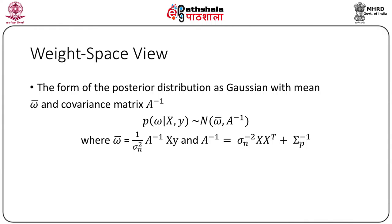Now we will talk about the function space view. A Gaussian process is a collection of random variables, any finite number of which have a joint Gaussian distribution. A Gaussian process is completely specified by its mean function m(x) and covariance function k(x, x'). We define m(x) = E[f(x)] and k(x, x') = E[(f(x) − m(x))(f(x') − m(x'))], and write f(x) ~ GP(m(x), k(x, x')).